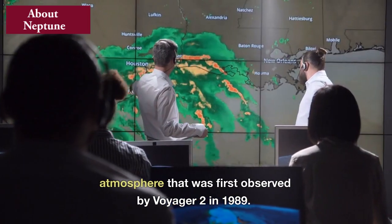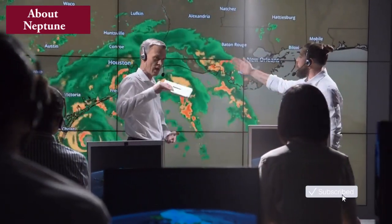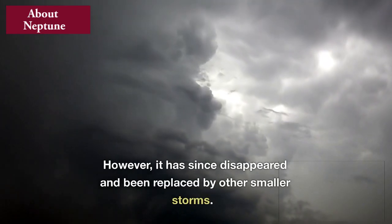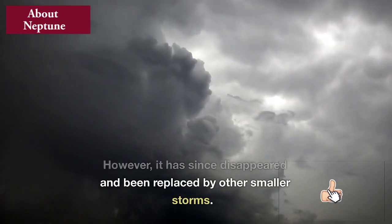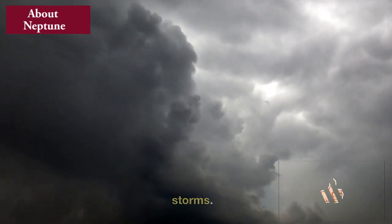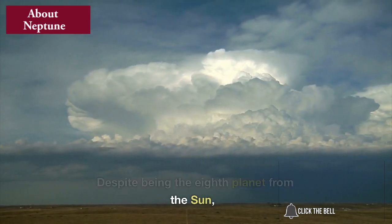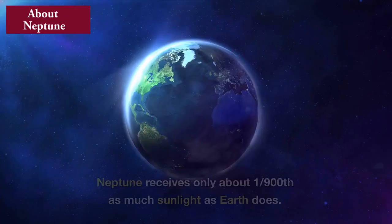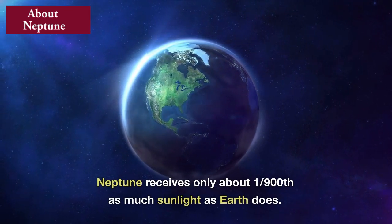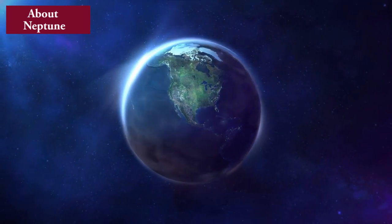However, it has since disappeared and been replaced by other smaller storms. Despite being the eighth planet from the Sun, Neptune receives only about 1/900th as much sunlight as Earth does.